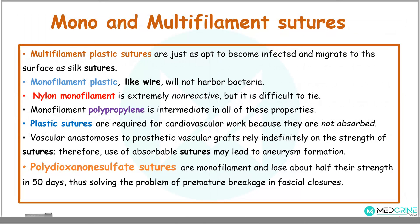Sutures can also be classified as either monofilament or multifilament. Multifilament plastic sutures are just as apt to become infected and migrate to the surface as silk sutures. Monofilament plastic sutures, like wires, will not harbor bacteria. Nylon monofilament is extremely non-reactive but is difficult to handle. Monofilament polypropylene is intermediate in all these properties. Plastic sutures are required for cardiovascular work because they are not absorbed, and vascular anastomoses for prosthetic vascular grafts rely indefinitely on the strength of these sutures; therefore, the use of absorbable sutures may lead to aneurysm formation. Polydioxanone sutures are monofilament in nature and lose about half their strength in 50 days, solving the problem of premature breakage in fascia closures.